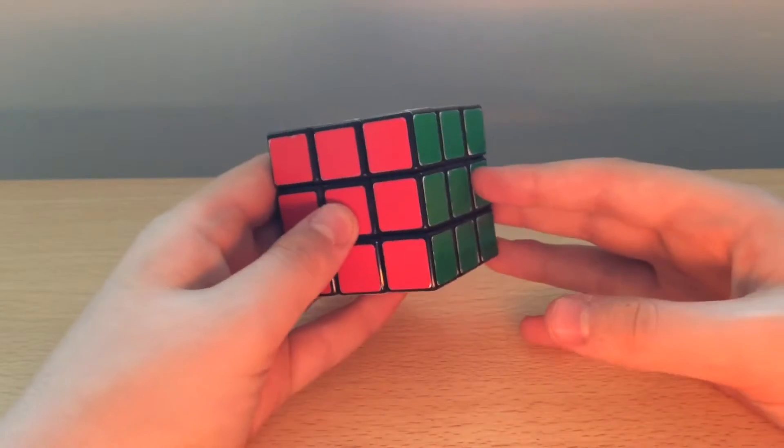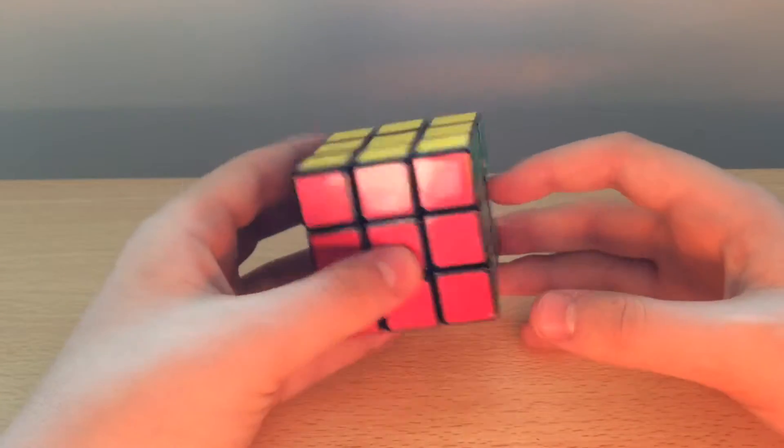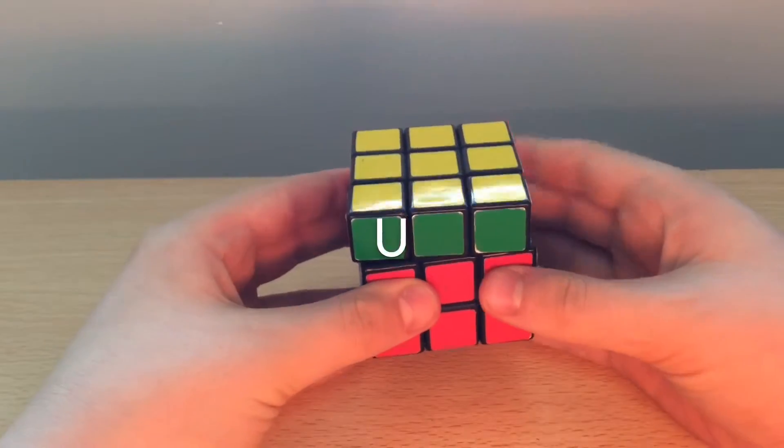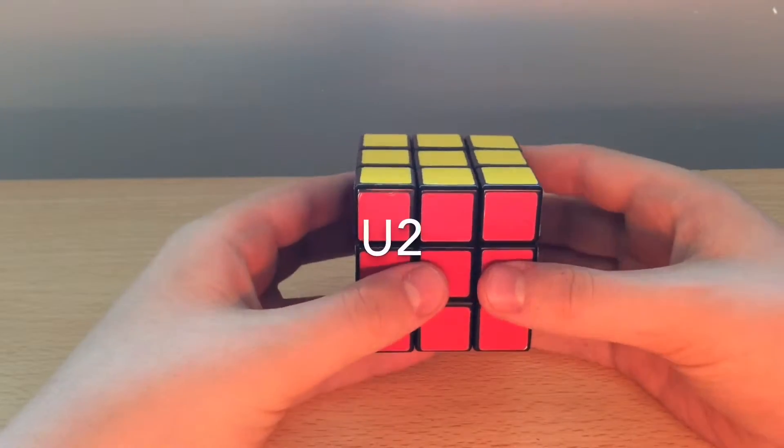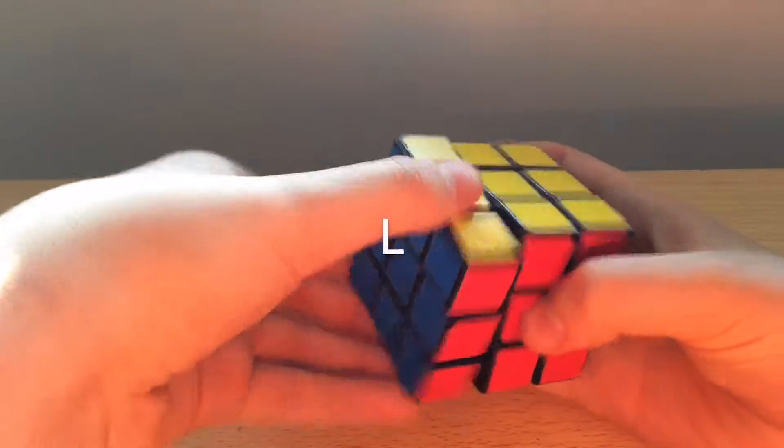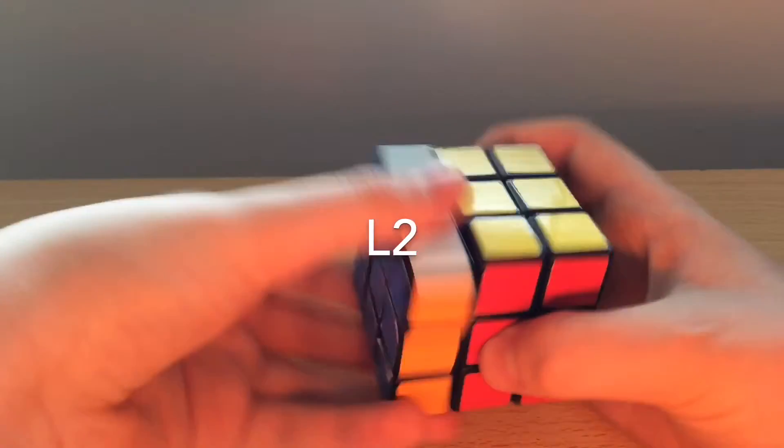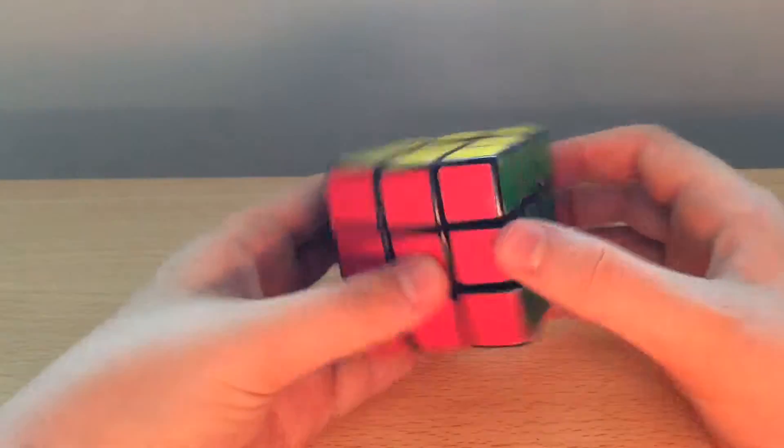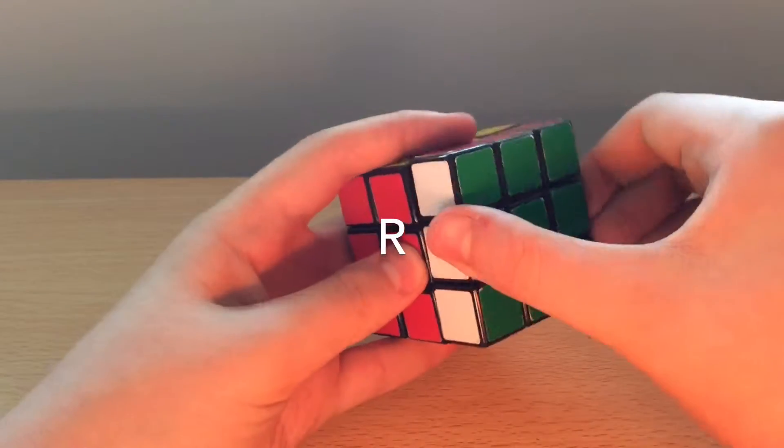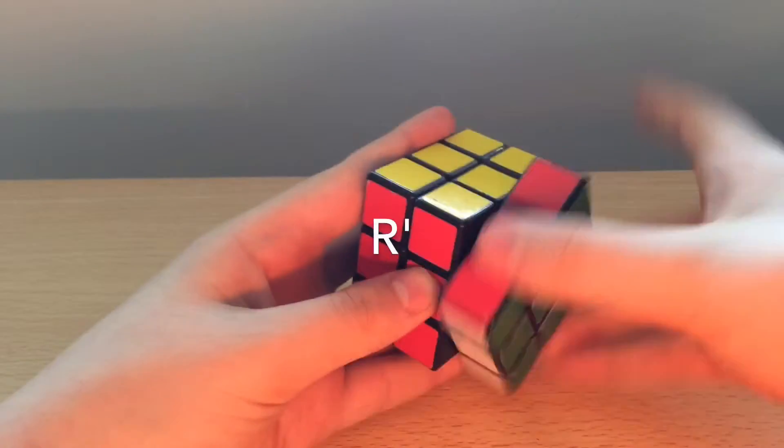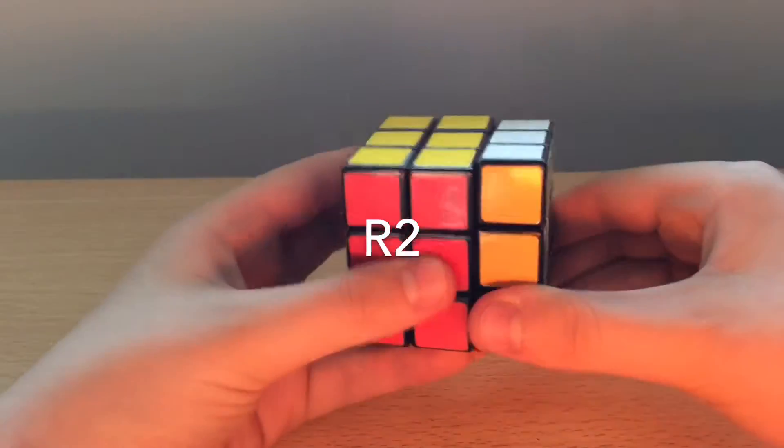So to recap, for all the beginners notation we have got U, U prime, U2, and then we've got L, L prime, and L2. And then for this one we've got R because it's going clockwise, R prime, and R2 like that.